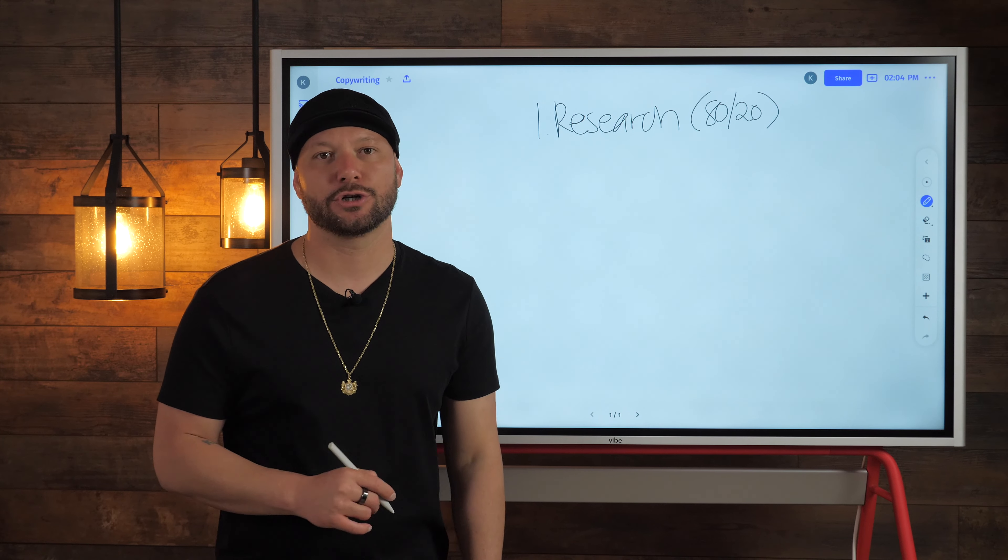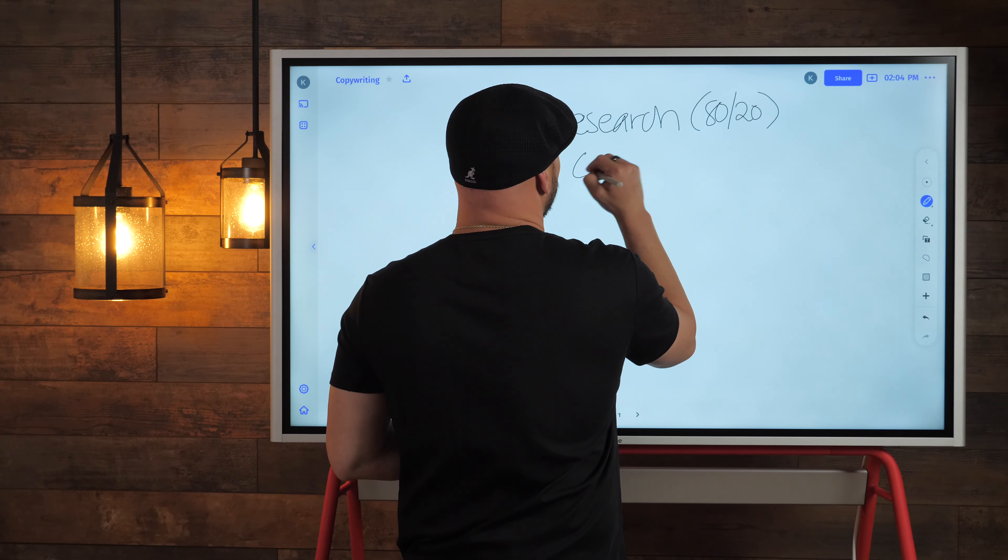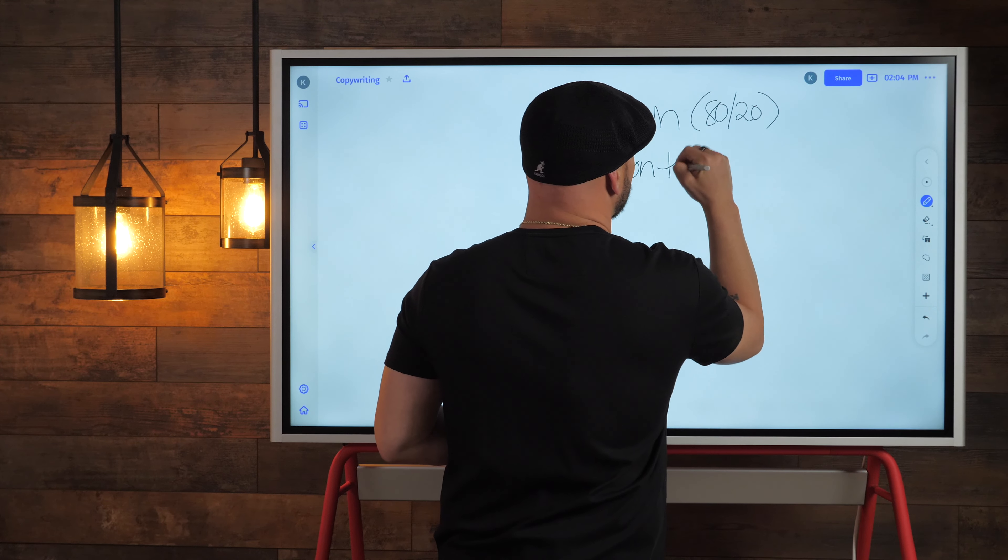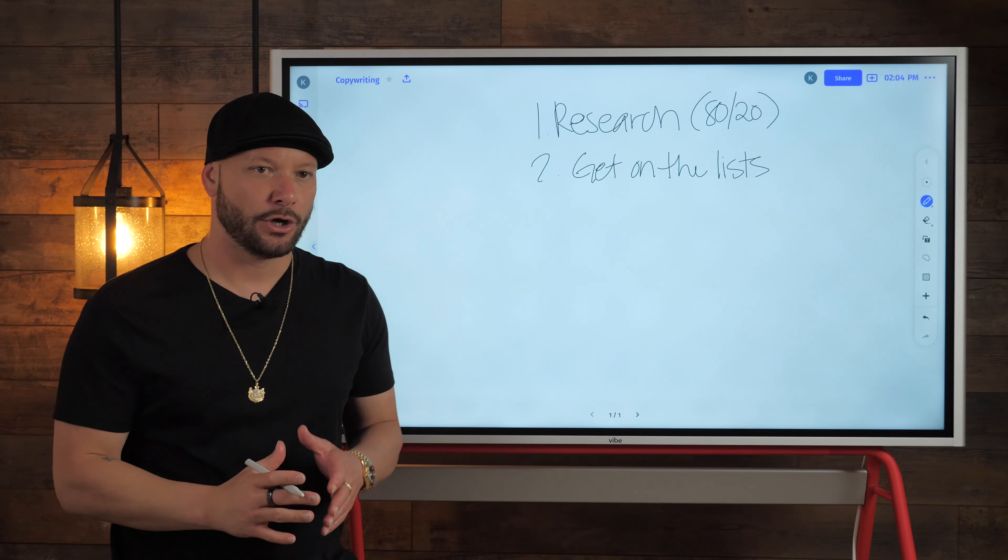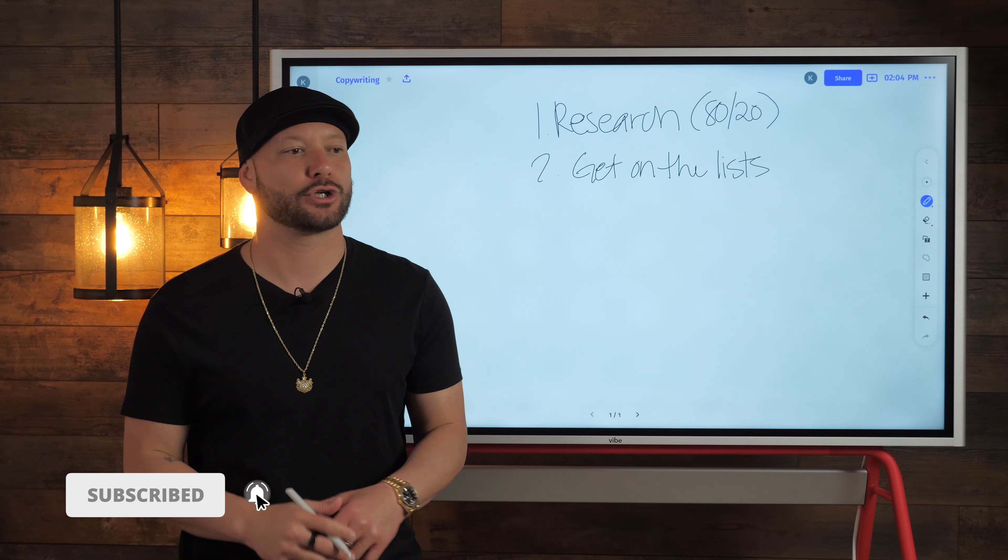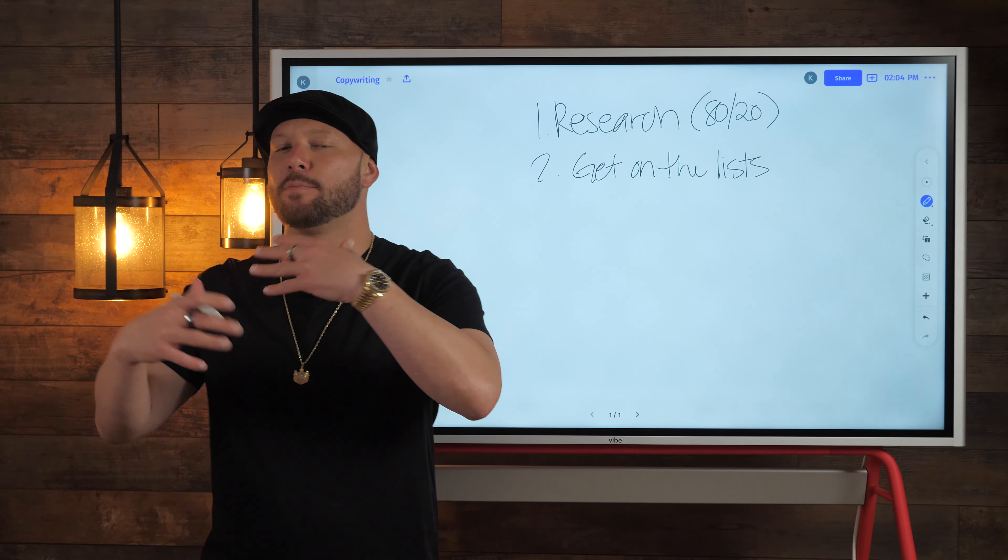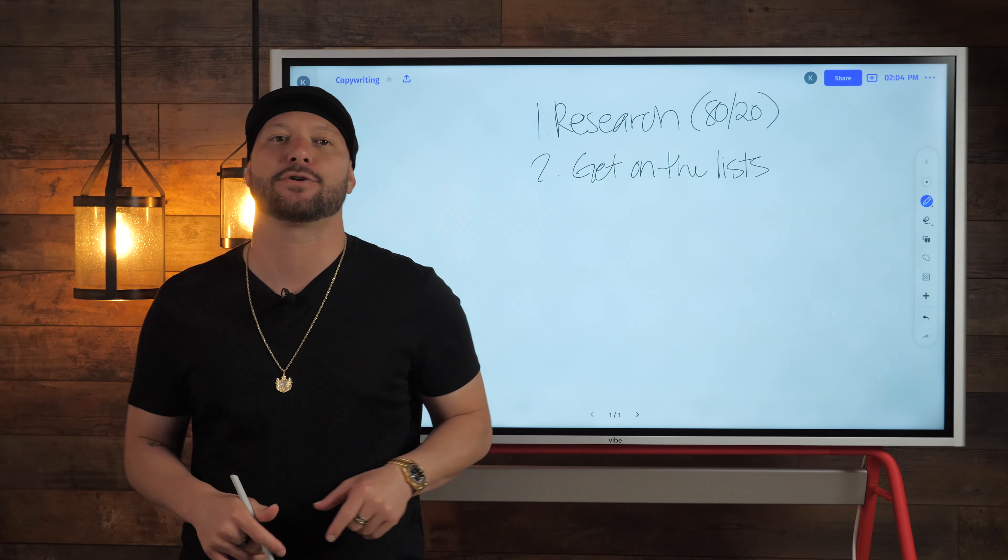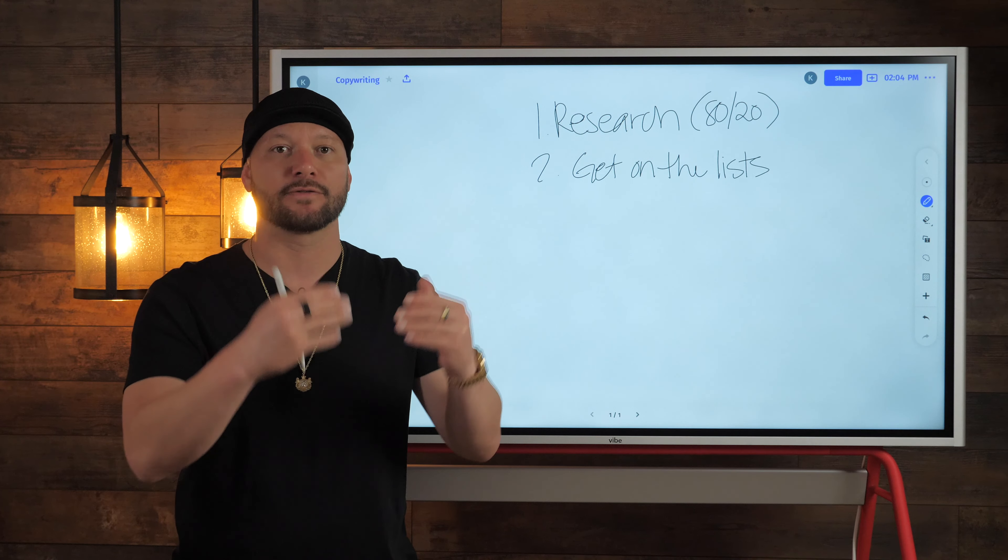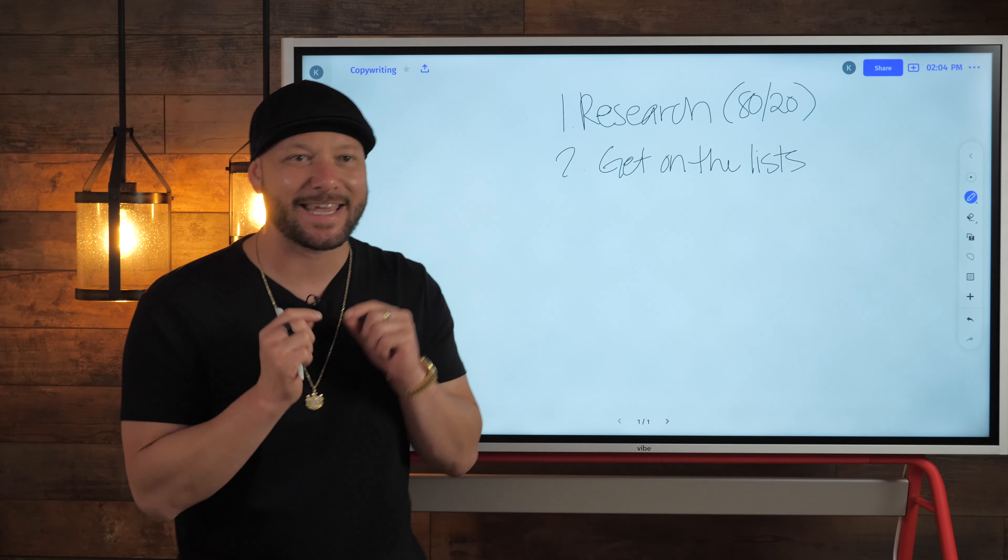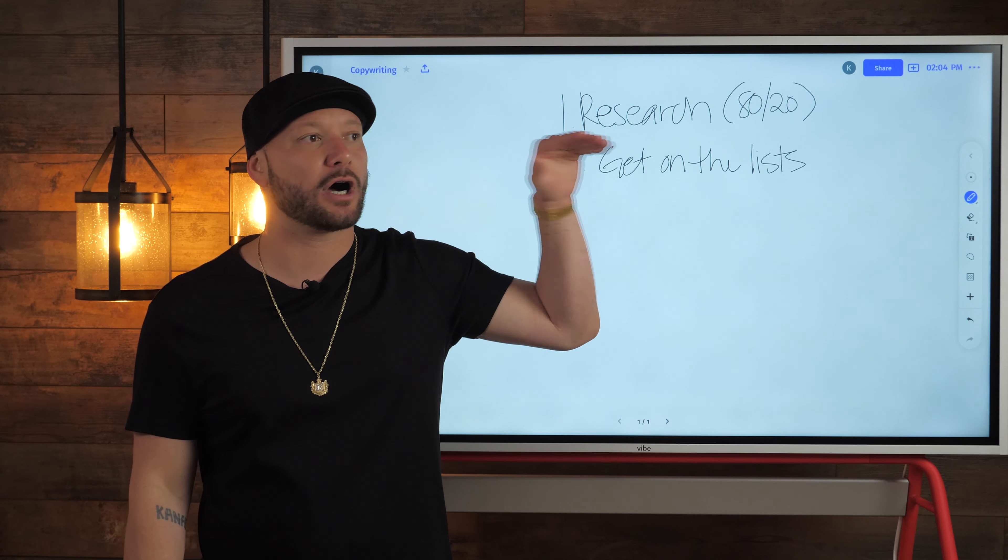All right, so tip number two is going to be to get on the lists. So this is another one that I used early on. Get on the list of other marketers who are effective in that particular niche. So when I was first getting online, understanding the digital landscape, I started opting into everybody in my niche. I started opting into everybody's funnel that I knew was producing results and I started reading all of their emails. In fact, I dedicated a specific Gmail address to just that, to just opting in to other people's funnels and getting on their list.